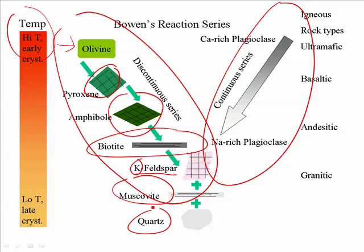At the same time the continuous series is going on, it starts off with the first mineral forming being calcium-rich plagioclase. Calcium-rich plagioclase is kind of gray in color. It happens to be called anorthite. As the melt cools down, the calcium is booted out of the plagioclase and replaced by sodium. So if there's enough sodium to boot out the calcium, by the end of the continuous series, it is all sodium-rich plagioclase.